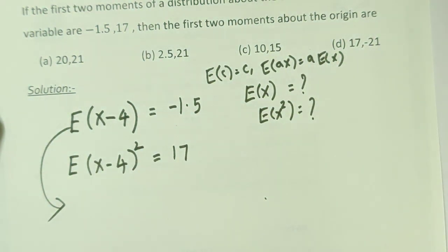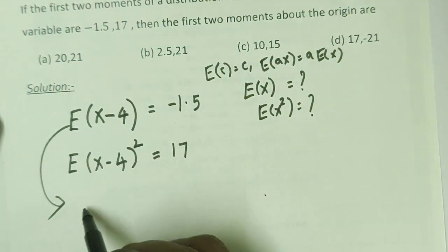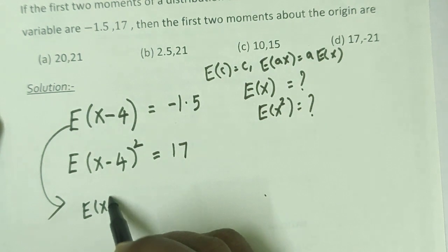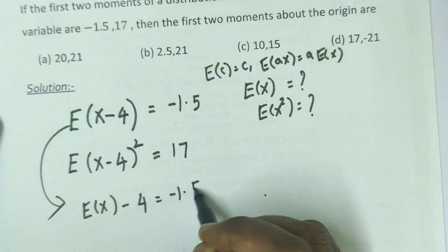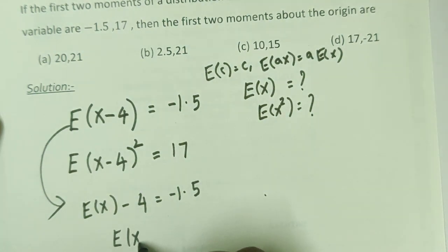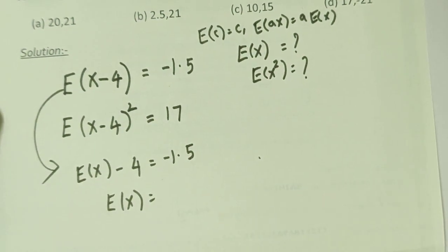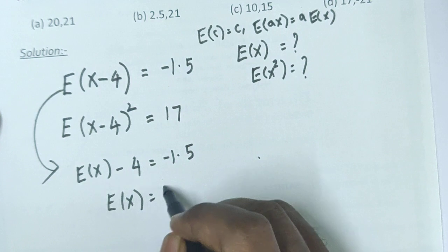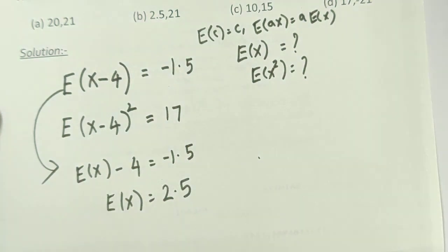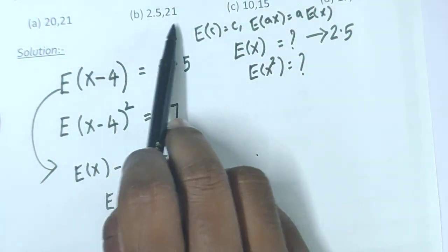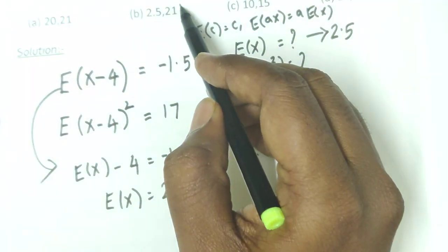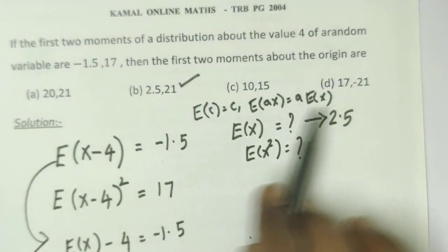E of ax plus b. E of x minus 4, E of constant, one of constant 4 is minus 1.5. E of x minus 4 equals minus 1.5. E of x minus 4 equals minus 1.5, so E of x equals 2.5. This is the E of x value, so one value is 2.5. Option B has 2.5.